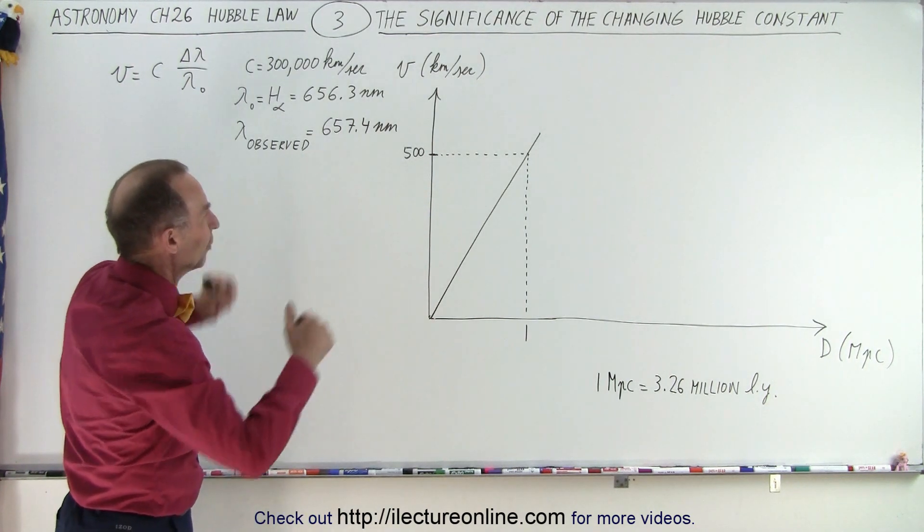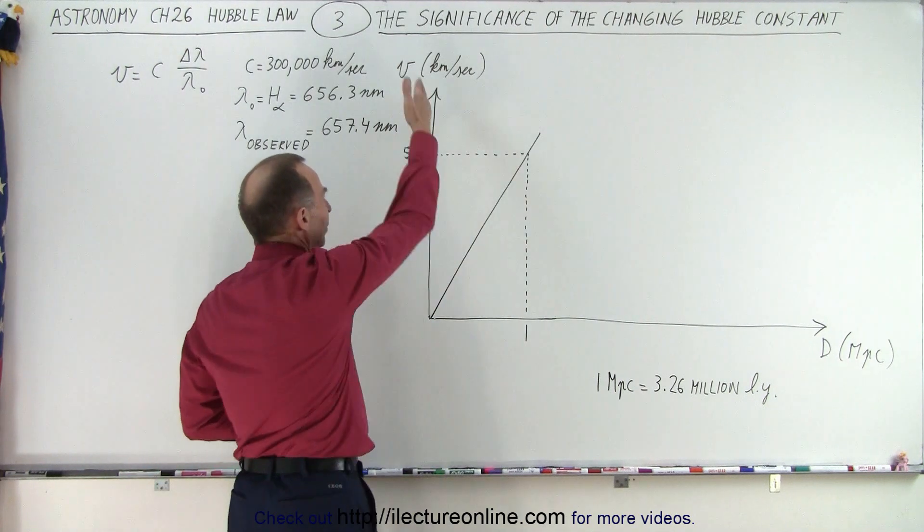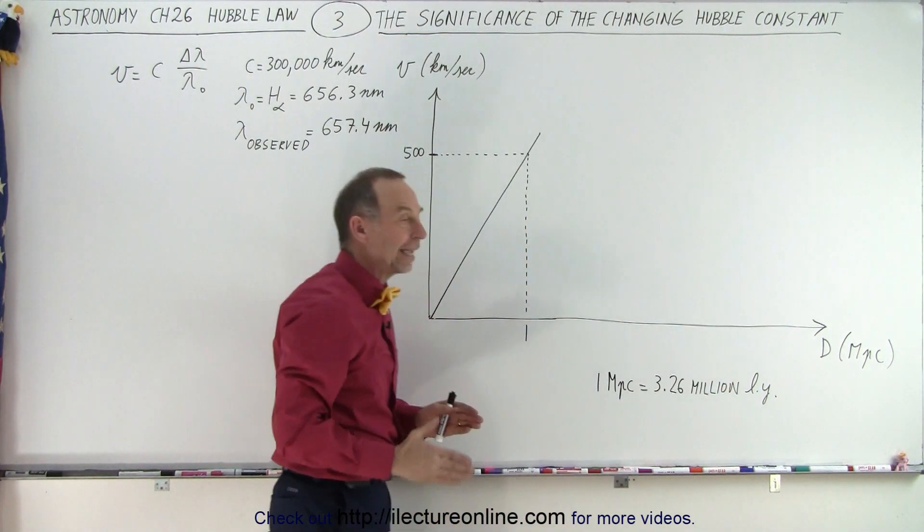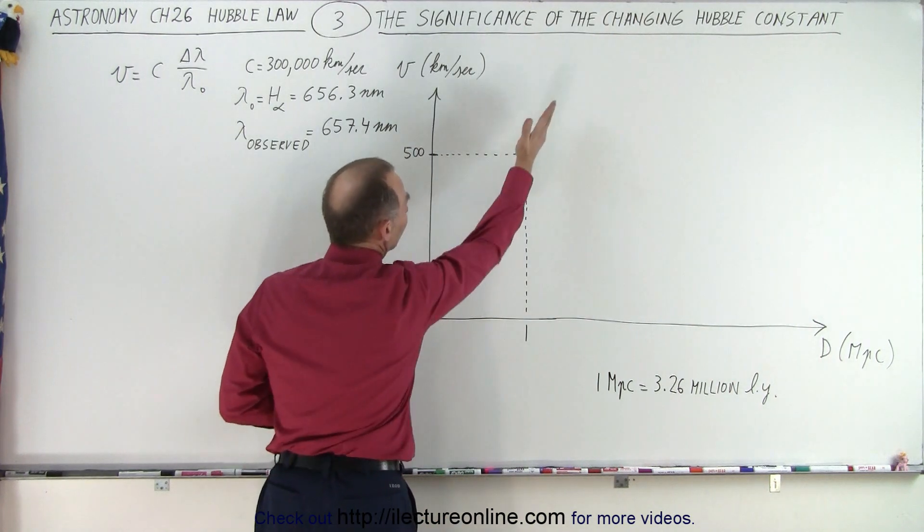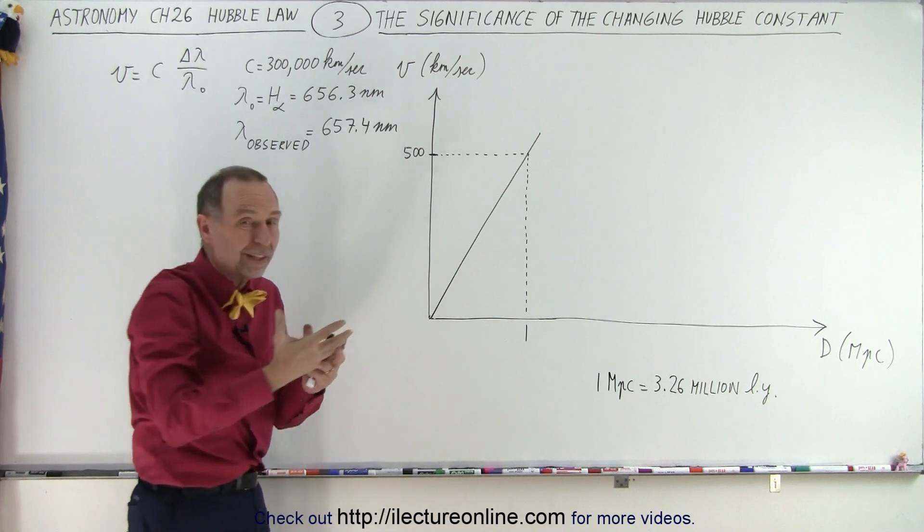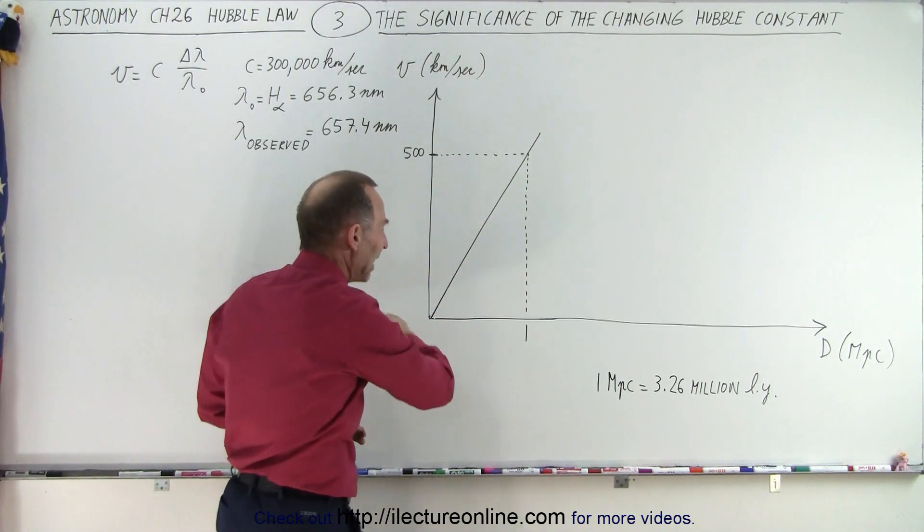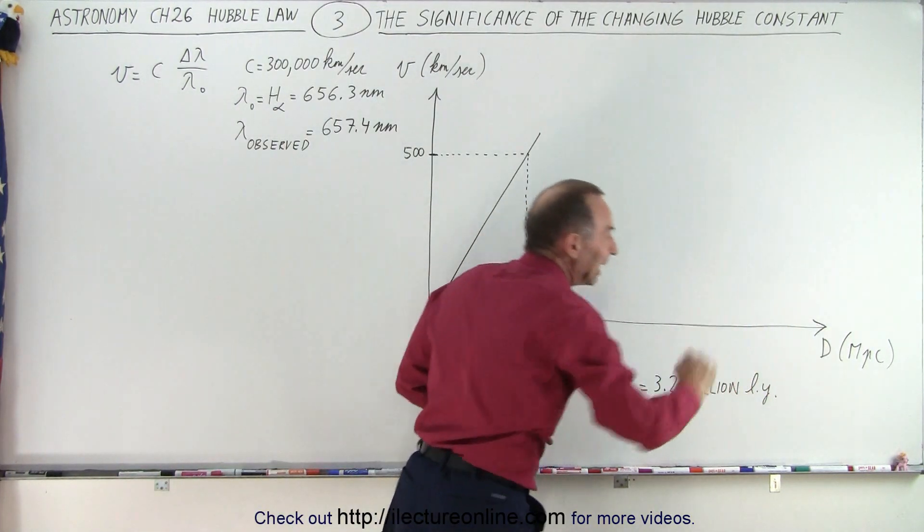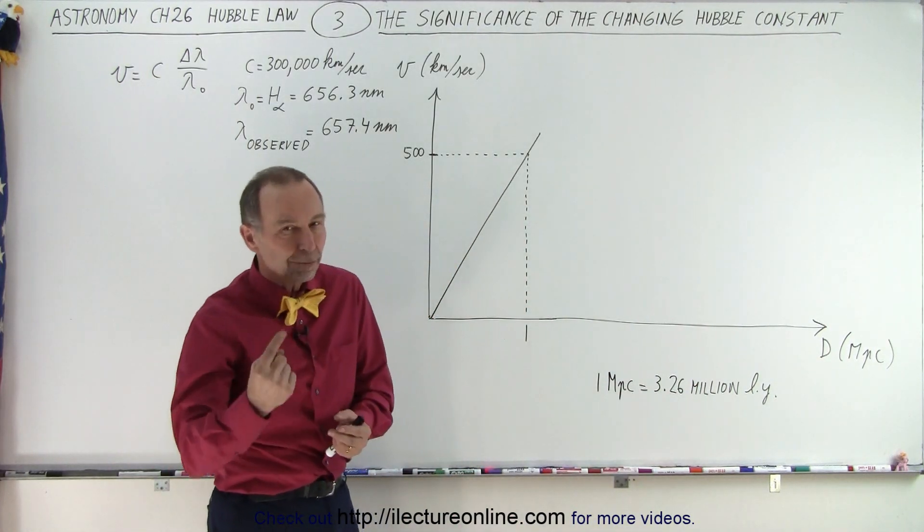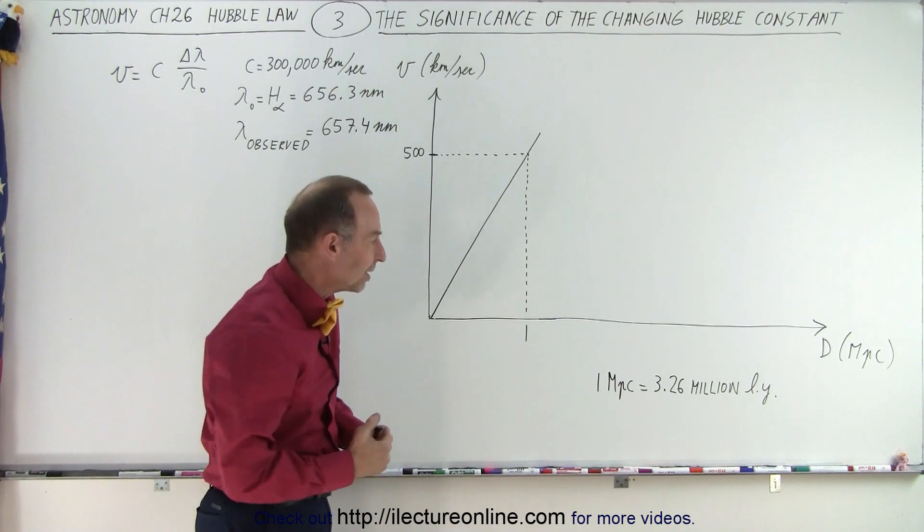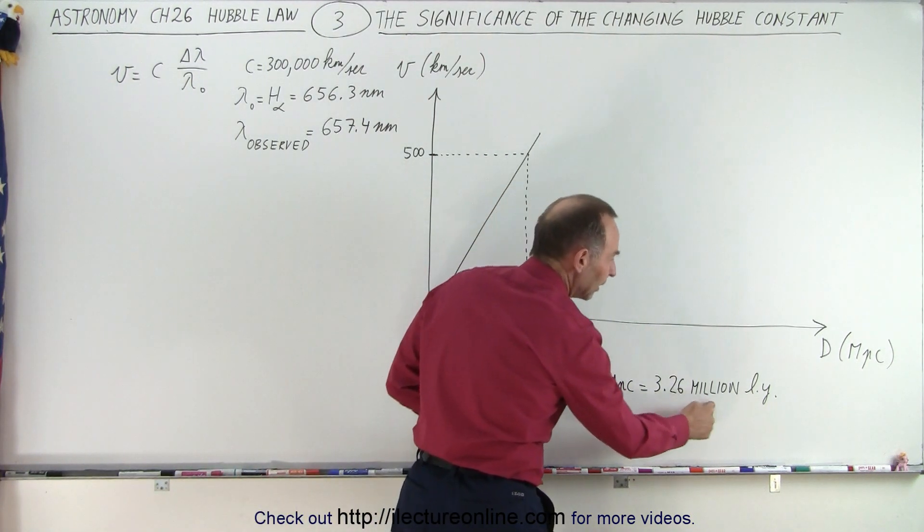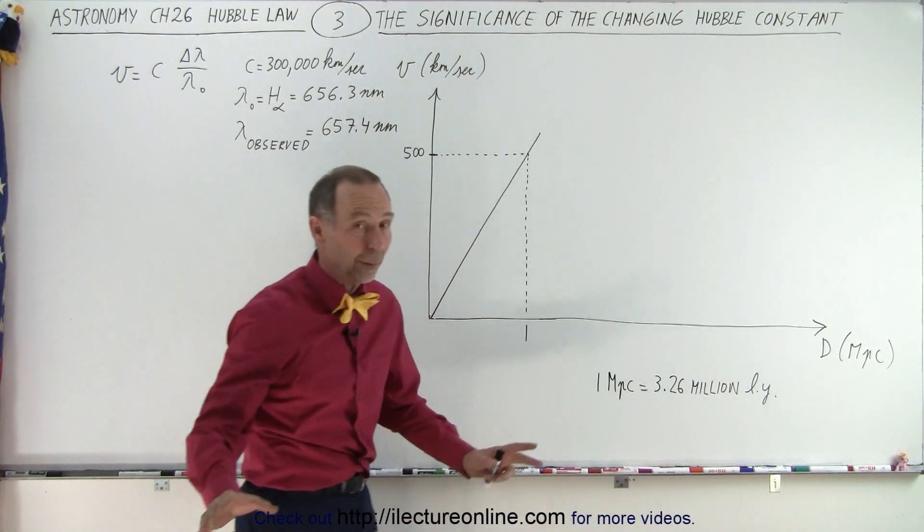Well here we have again the very famous graph where on the vertical axis we have velocity, on the horizontal axis we have distance and here this line represents the linear relationship between velocity, recessional velocity, the speed at which galaxies move away from us and how far those galaxies are in megaparsec. Remember that mega means million, one parsec is 3.26 light years.